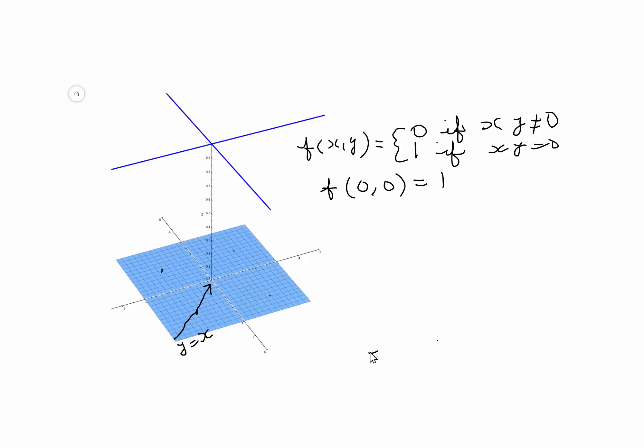then other than at the origin, what happens? My (x, y) is not going to be 0, right? Because both these values are non-zero along the line y equals x.